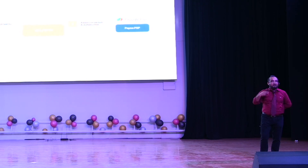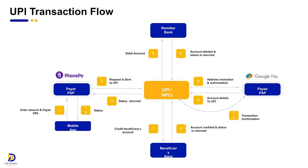If I am transferring funds to someone, I will enter his Google Pay UPI ID in my PhonePe. Based on his Google Pay UPI ID, NPCI will retrieve his bank account details in step number four. So now NPCI has two bank account details — one is the account to be debited.